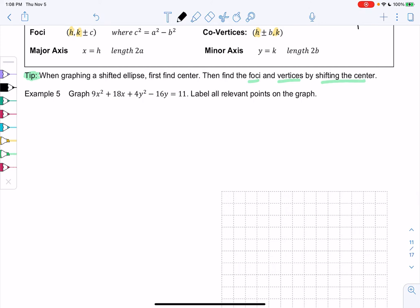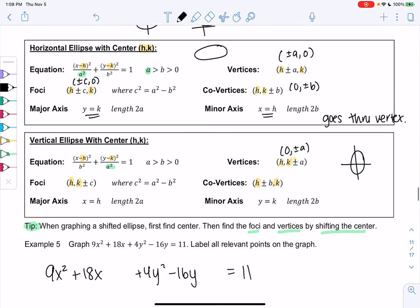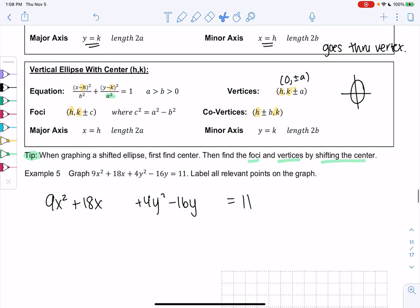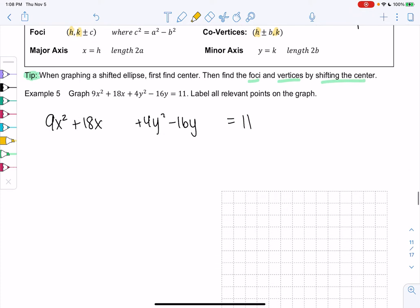So let's complete the square for example 5. We have 9x squared plus 18x plus 4y squared minus 16y equals 11. And we want to make it look like one of these two equations, one of the ellipses equations. So it looks like I'm going to have to complete the square to get those square terms, and then probably divide to make the other side equal to 1.